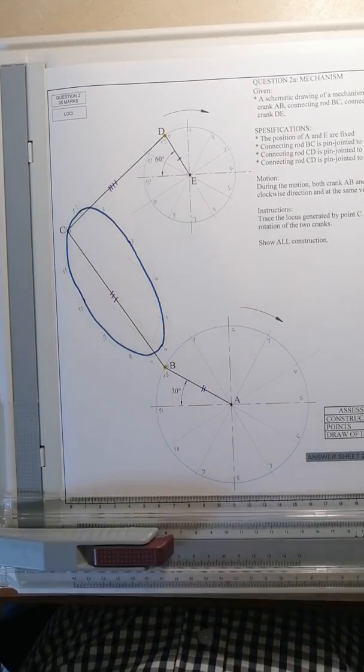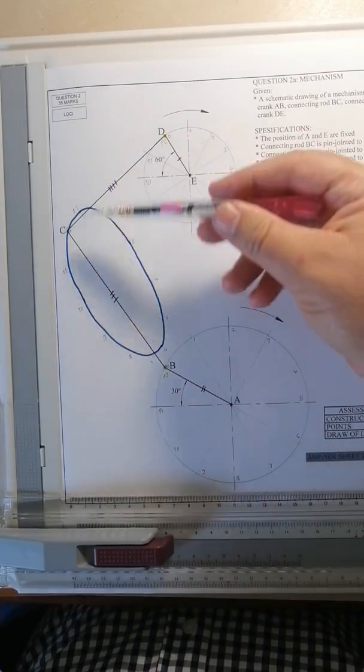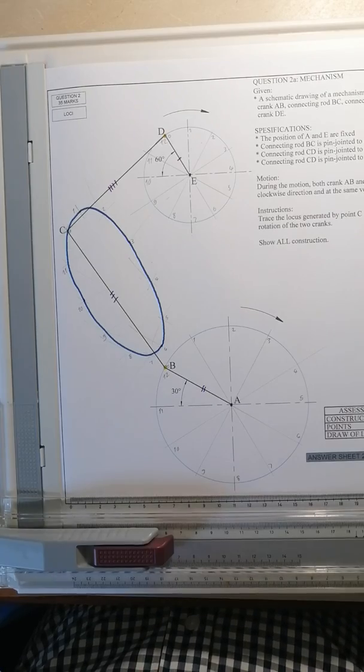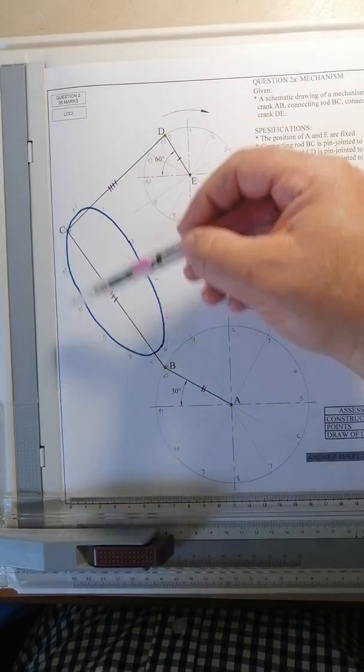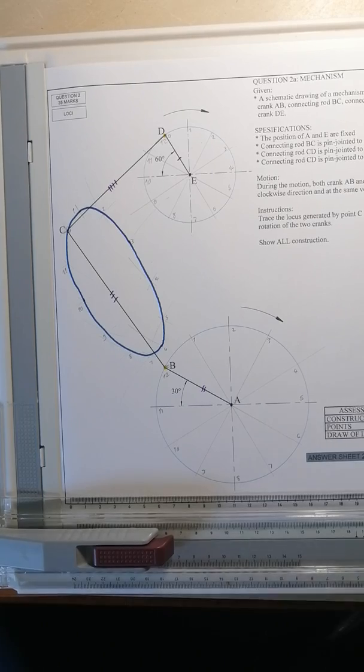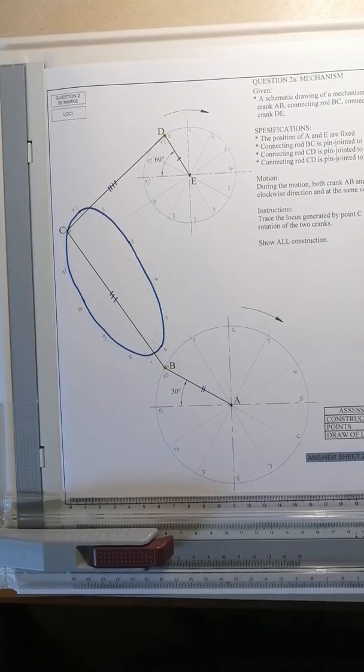Mark allocations: four marks for the constructions, and then for each point was one mark. And then lastly, for the drawing of the locus, you can also try to draw the locus making use of your French curve or your Flexi curve.